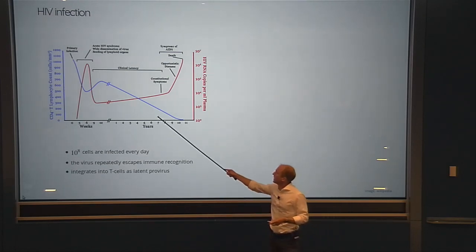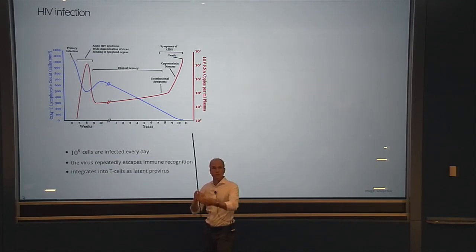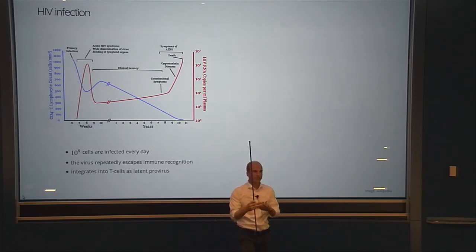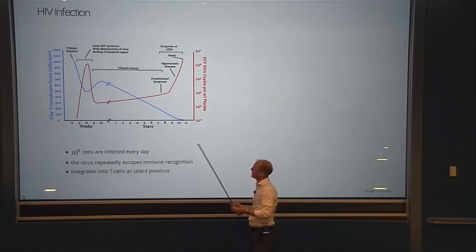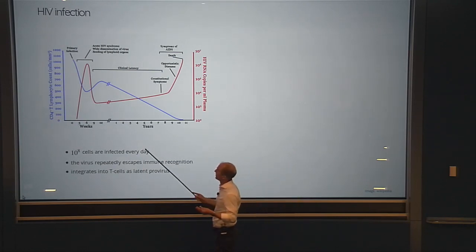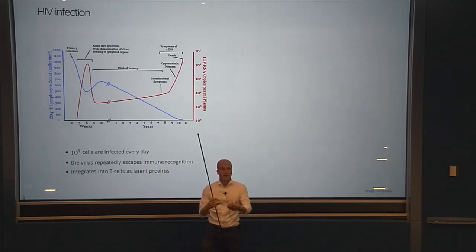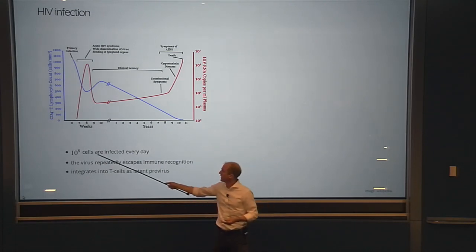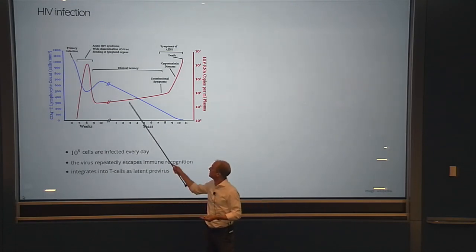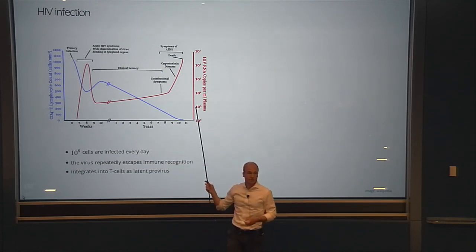Even in this asymptomatic phase, the person doesn't seem sick in any sense, but there's a lot going on. The virus is constantly fighting with the immune system. In fact, there are roughly 10^8 cells infected every day during these many years.